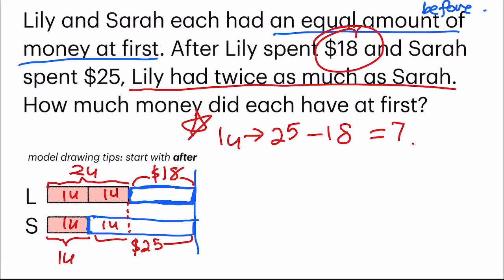The rest of the steps is the same as what we have done before. So with that, 1 unit is 7. You can, again, use Lily. Lily has 2 units plus 18. So 2 times 7 plus 18, equals 32.